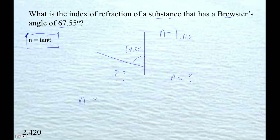So this is easy. n is equal to tan of 67.55. So I just go tangent of 67.55, and I get 2.42.